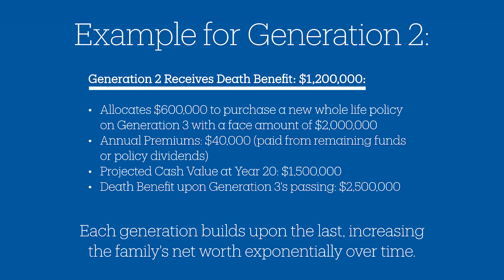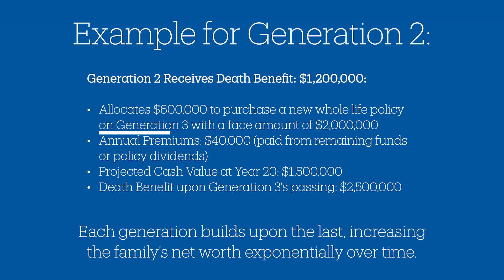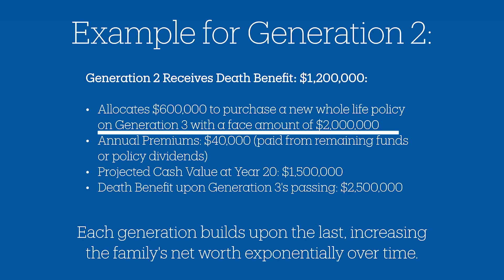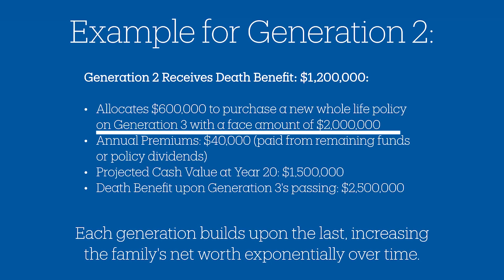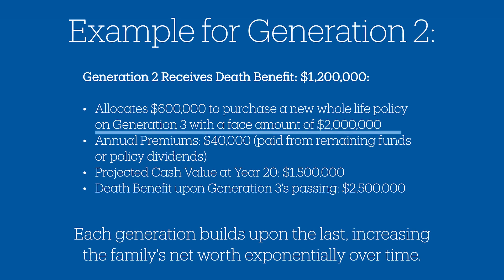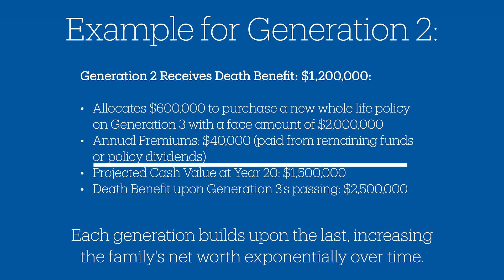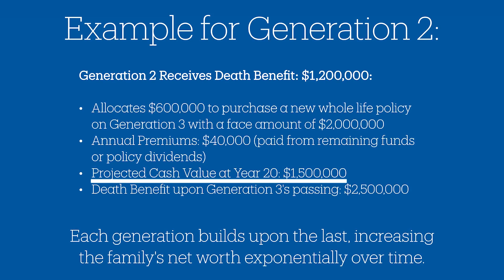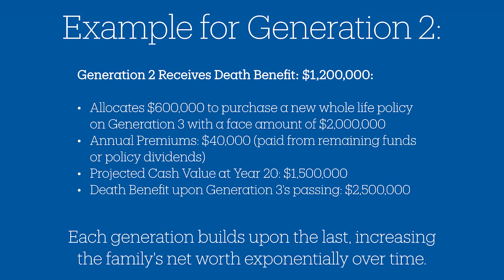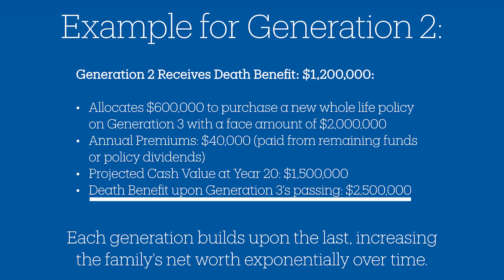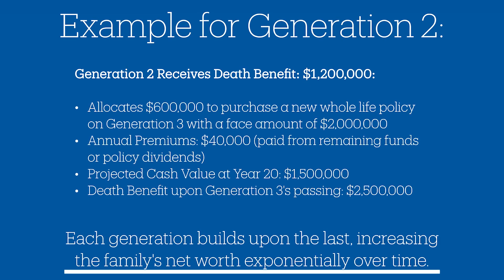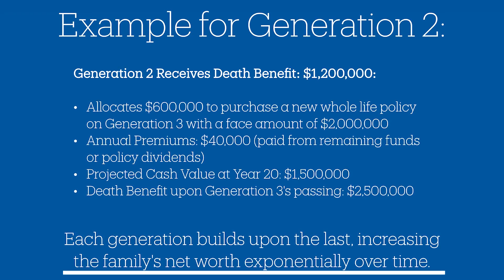Generation two receives the $1.2 million death benefit and allocates $600,000 — half of that money — to purchase new whole life insurance on generation three with a face amount of $2 million. Annually, they'll pay about $40,000 from the funds set aside to fund this policy. The projected cash value after 20 years will be about $1.5 million, and the death benefit would have grown to about $2.5 million. Each generation is building upon the last and expanding the family's net worth — and this is just inside the insurance contract. Imagine the investments happening outside of it.